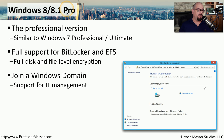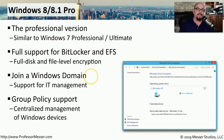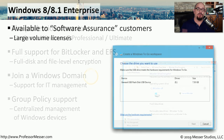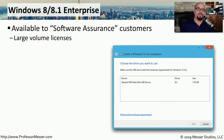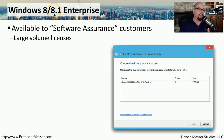The Pro Edition of Windows 8.1 can join a Windows domain, which means the IT team can use group policies to manage these systems. For large organizations that use volume licensing — sometimes called software assurance customers — they can use Windows 8 or Windows 8.1 Enterprise.